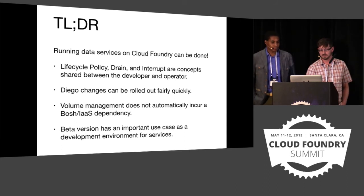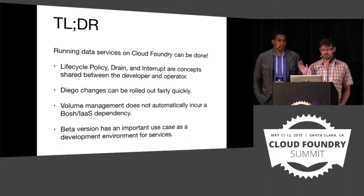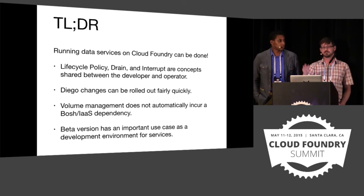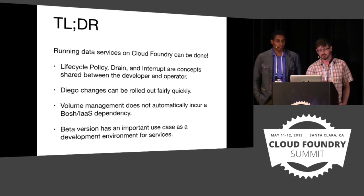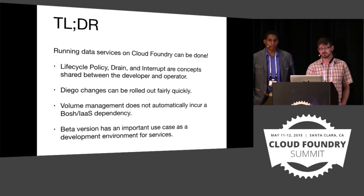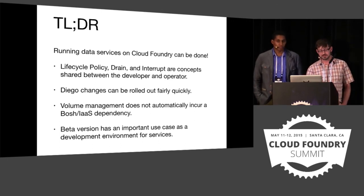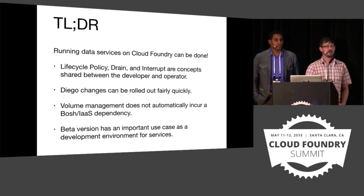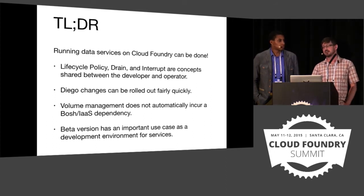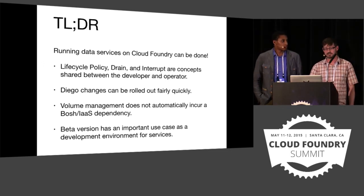That's pretty much it. The high-level stuff affecting the Cloud Foundry interface is a lifecycle policy, drain, and interrupt — those are the new concepts. We're excited because our spike was not actually very hard to implement, so we believe it should be possible to roll these changes out fairly quickly given a concerted effort. The volume manager allowed us to keep the Diego platform decoupled from BOSH or the IaaS — we were concerned that managing volumes might cause more IaaS-specific stuff to show up in Diego, but that doesn't seem to be the case.